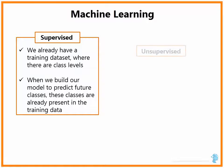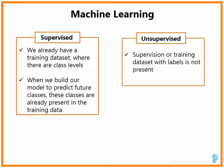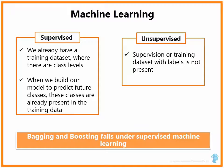The other major area is unsupervised learning, where this type of supervision or labeled training data is not present. Today's discussion on Bagging and Boosting falls under supervised machine learning, meaning that in our training dataset we already have class labels present.